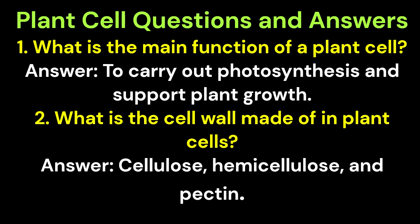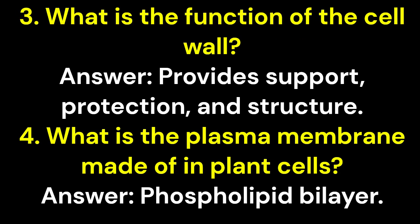1. What is the main function of a plant cell? Answer: To carry out photosynthesis and support plant growth. 2. What is the cell wall made of in plant cells? Answer: Cellulose, hemicellulose, and pectin. 3. What is the function of the cell wall? Answer: Provide support, protection, and structure.